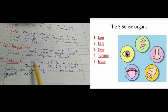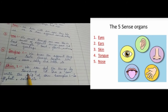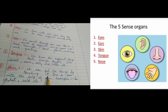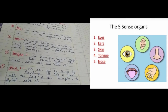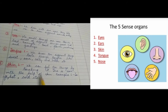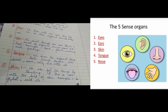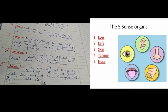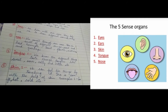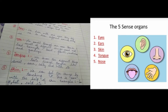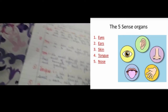The last sense organ is skin. We can feel things by touching them. When you touch anything, you get to know if it is soft or hard. This is done with the help of skin. Examples of what skin can detect include soft, hot, and cold.